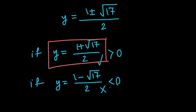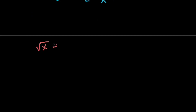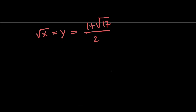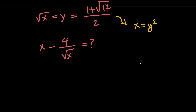Let's recap everything that we know. We know that root x equals y, and y equals 1 plus root 17, all divided by 2. We want to evaluate x minus 4 over root x. Since x equals y squared, evaluating x minus 4 over the square root of x is the same thing as y squared minus 4 over y.